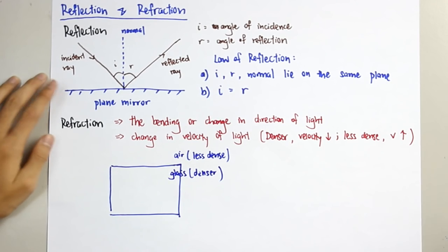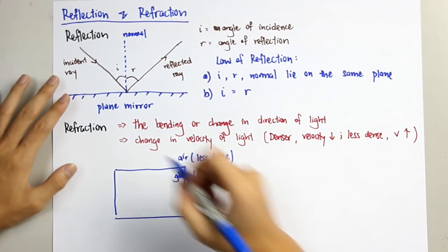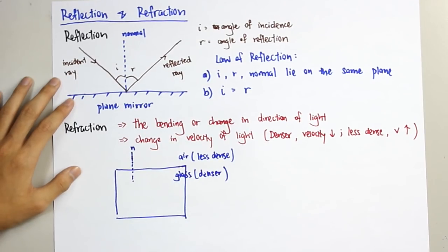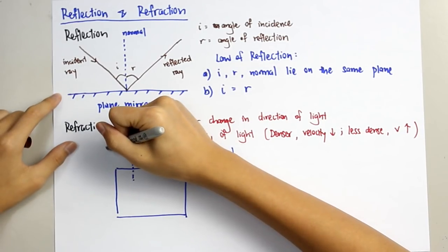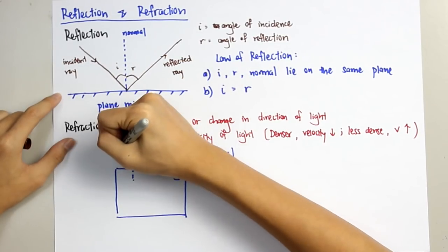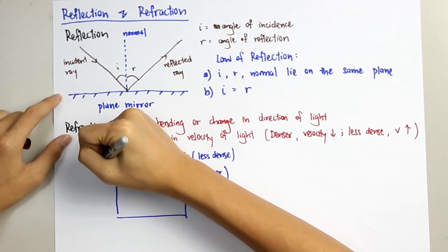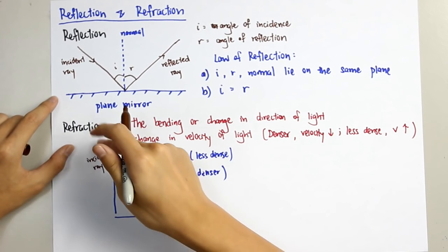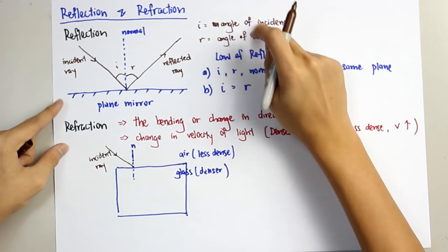Same thing, we need to draw the normal line to the surface before we draw the rays. First, draw a normal here. Then we give the incident ray. This is the incident ray. Same thing, the angle between the incident ray and the normal line, we call it the angle of incidence.